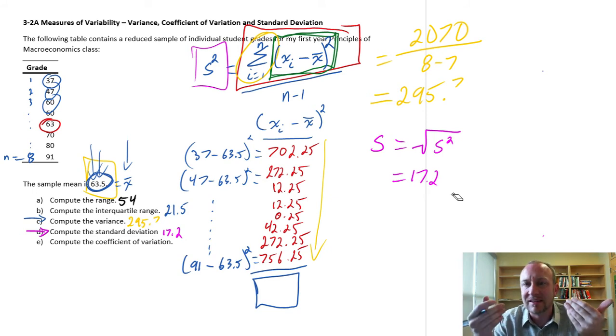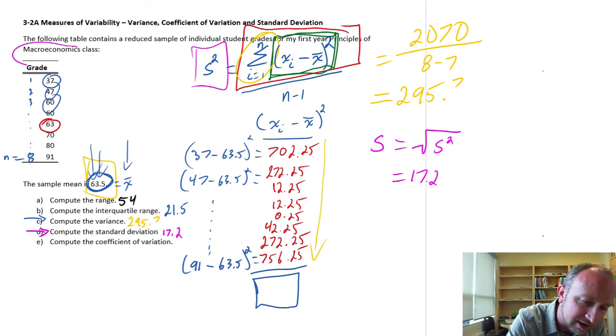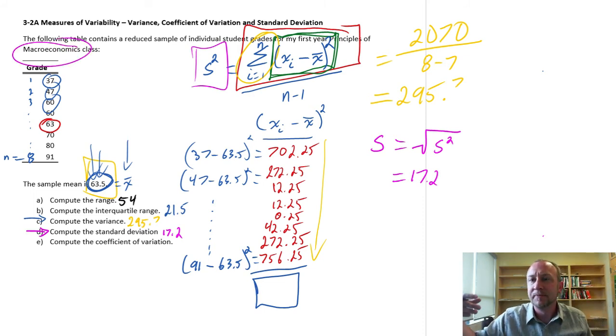So, what this means is the standard deviation is 17.2. And again, on its own, difficult to really extract much from it. It's helpful for comparing across data sets so we can see that this, maybe I'm looking at this is my macroeconomics class. Maybe I'm going to compare this against my microeconomics class or my statistics class or something else. So, I can compare which class has the greater amount of variation or the higher variability in grades.